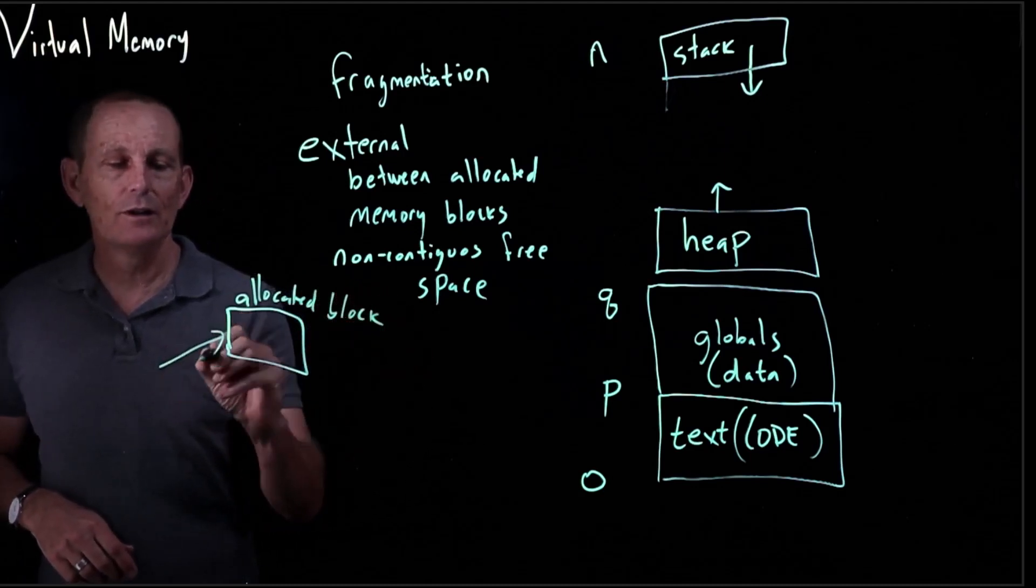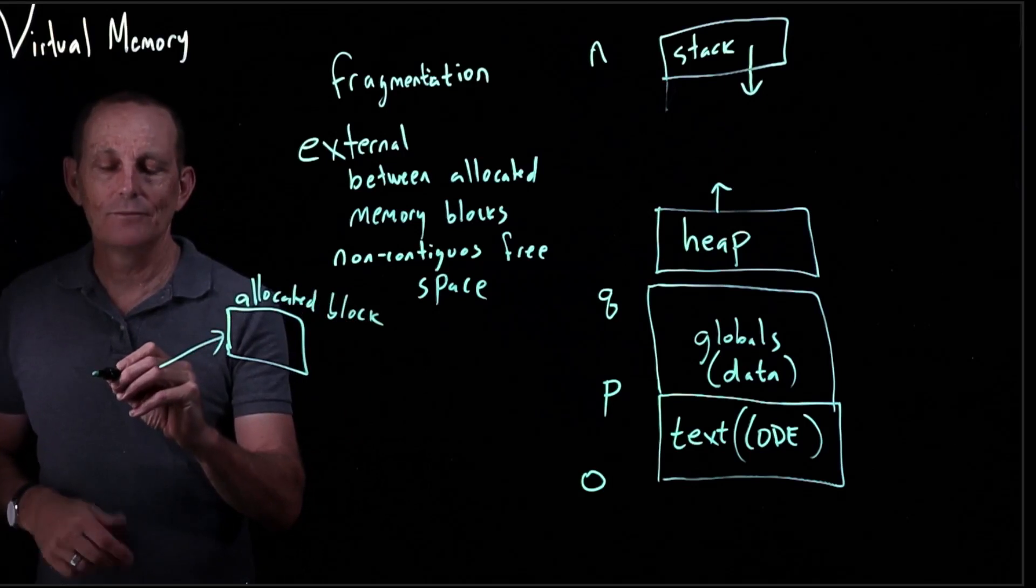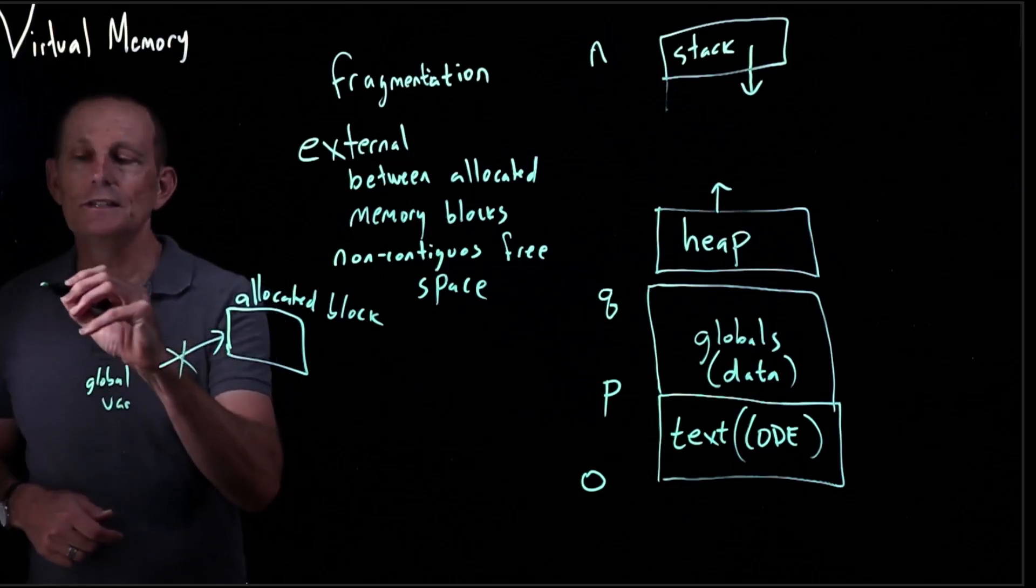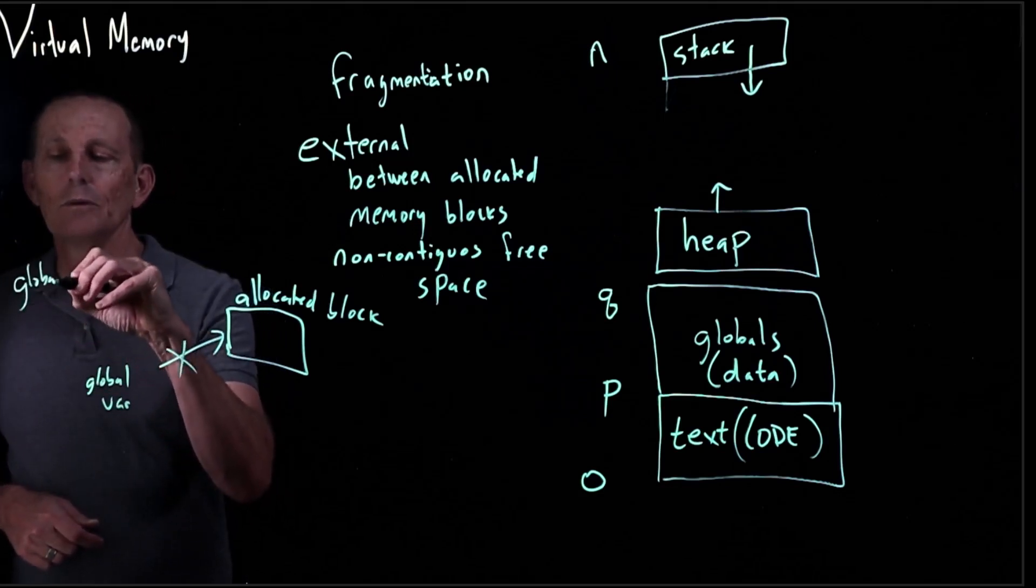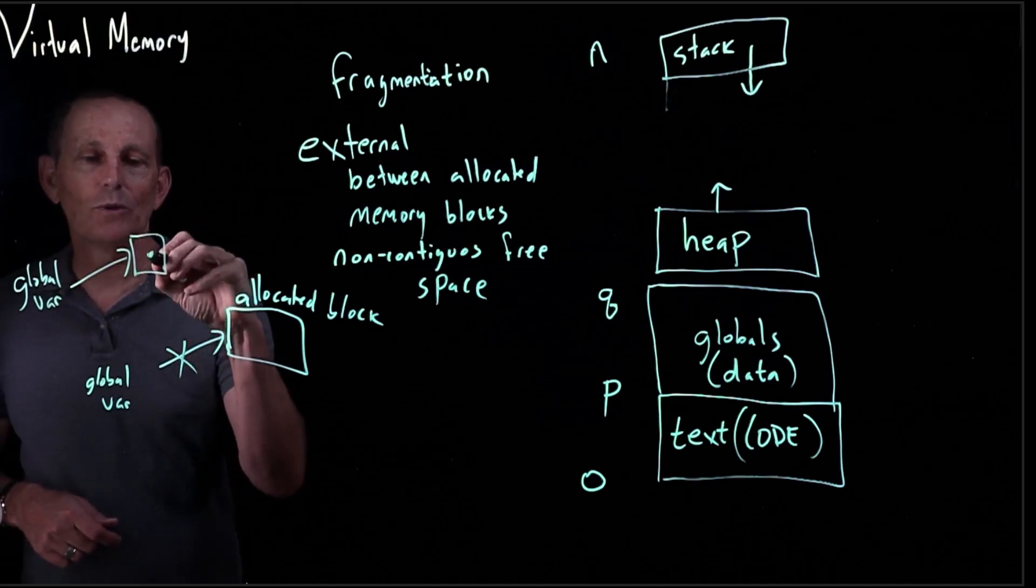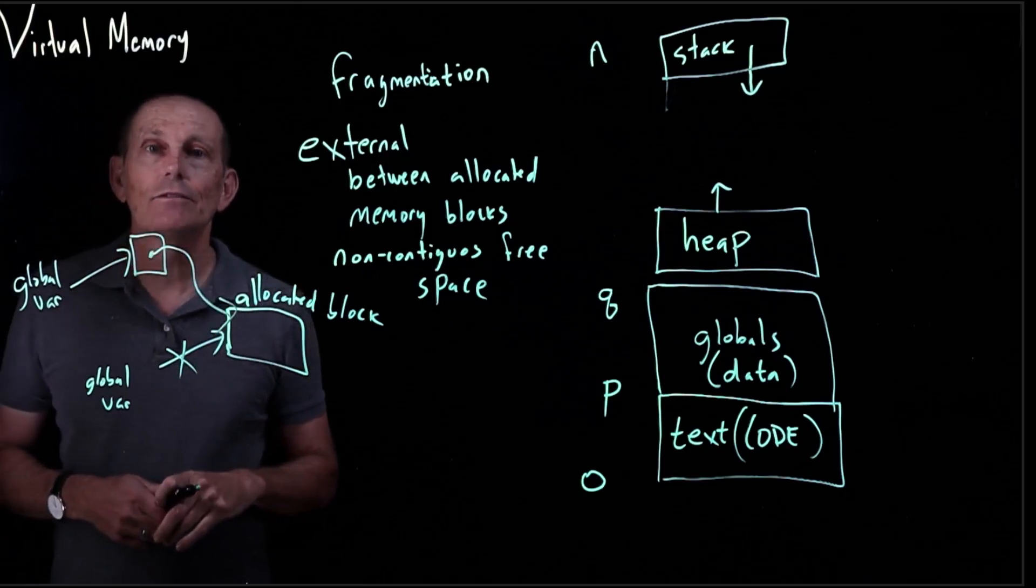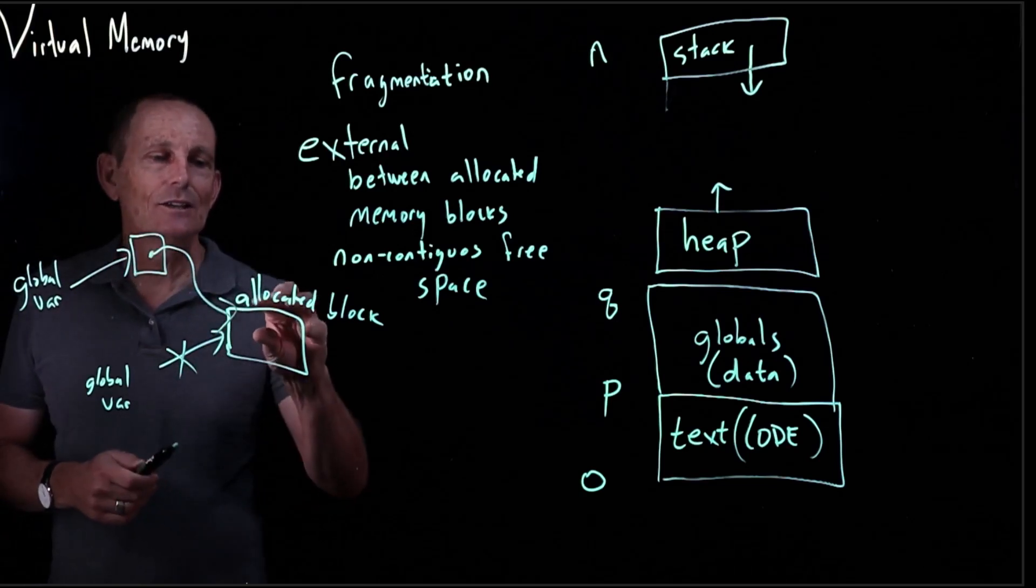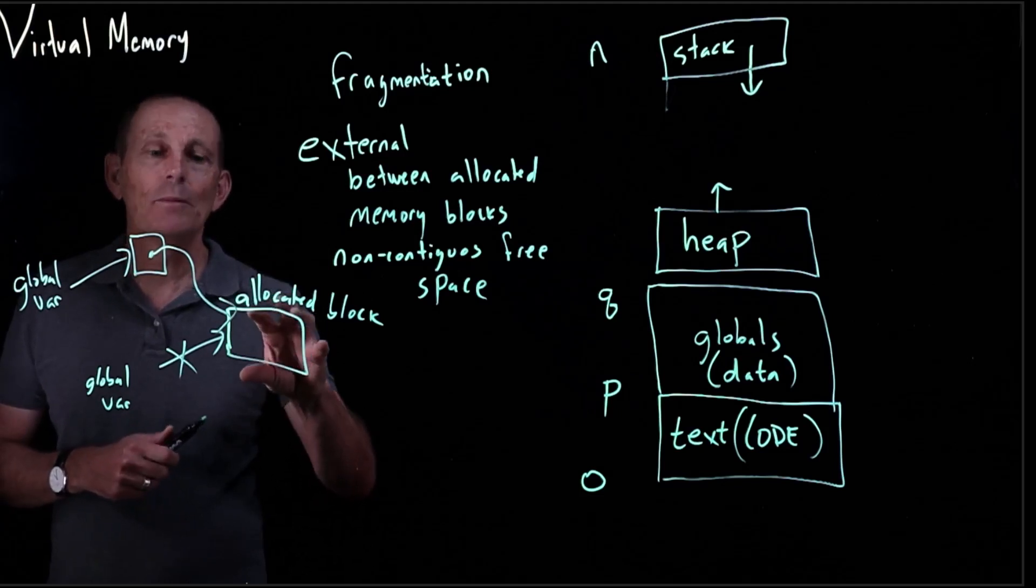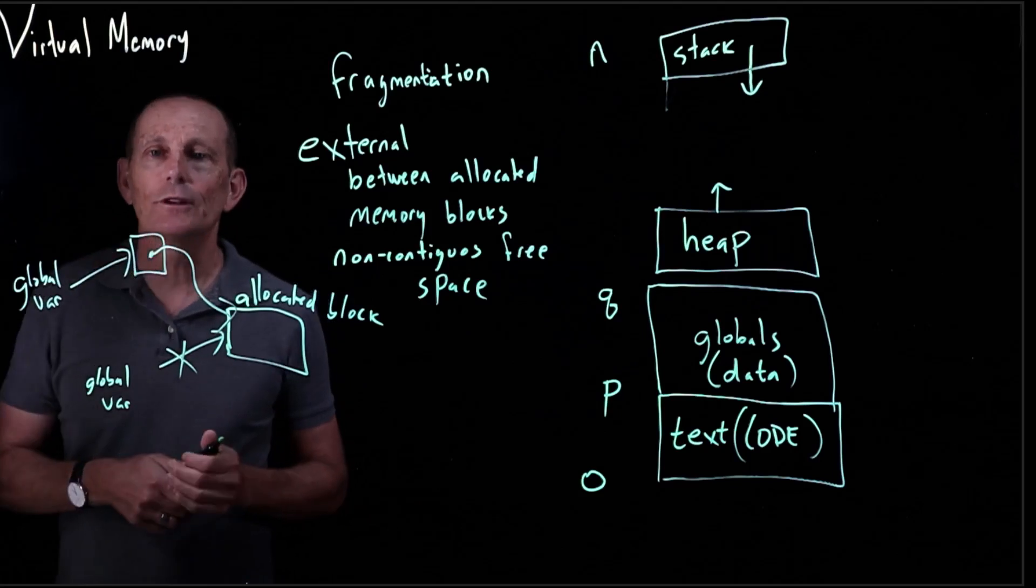You didn't store a pointer to it. So this is, let's say, your global variable. Instead, you had a global variable, and that global variable pointed to a pointer that in turn pointed here. And then, if there was a need to move this block, the memory manager would go ahead and update this pointer for you.